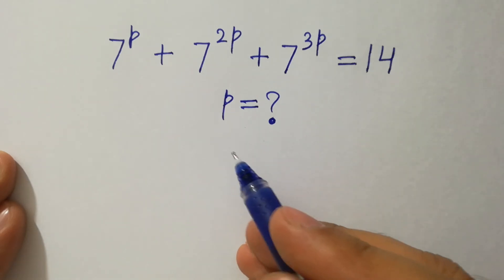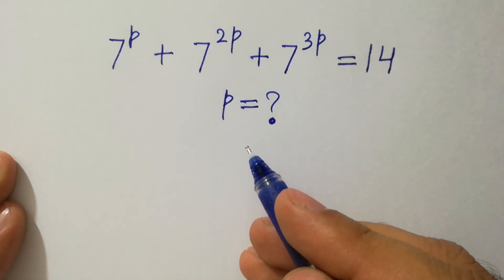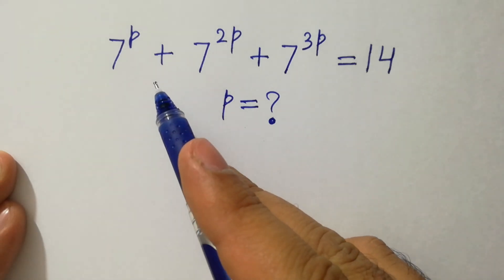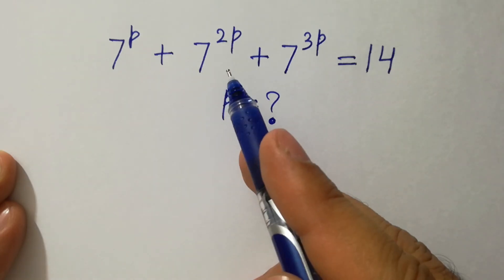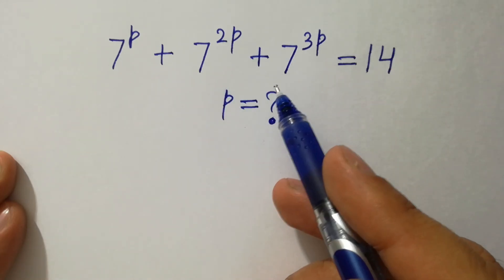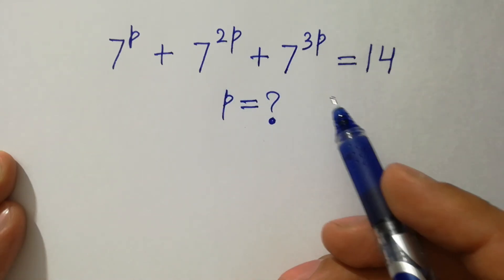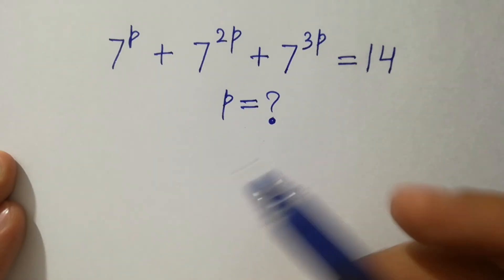Hello friends, find the value of p if 7 to the power p plus 7 to the power 2p plus 7 to the power 3p equal to 14.